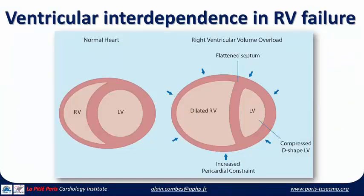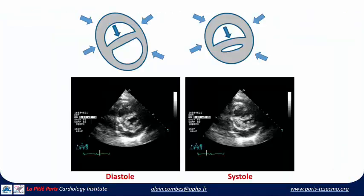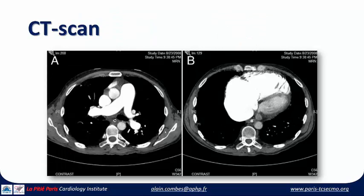The heart is constrained in the pericardial sac. When the RV dilates, it pushes the LV away — the septum will be flattened — and if heart failure is very severe, you will have a decrease in cardiac index and severe shock. Echo images show this flattening of the septum and massive increase in RV size. You might also diagnose this using a CT scan, for example in patients with severe pulmonary embolism.